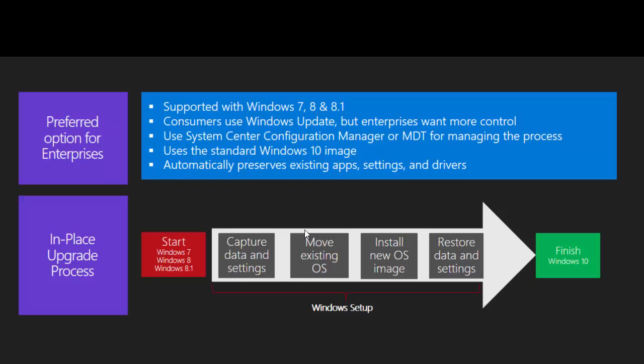An important thing is that you need to use the standard Windows 10 image from the ISO that you download. You can't customize it by adding your own drivers or images — that's something you do after you've deployed the operating system or done the upgrade in place. Think of this as doing a pure operating system upgrade, bringing everything across, then making additional changes after the fact.